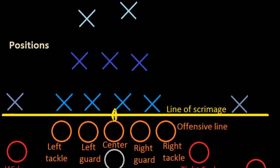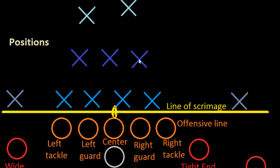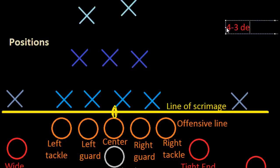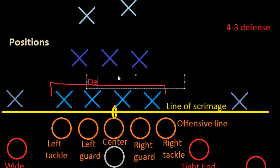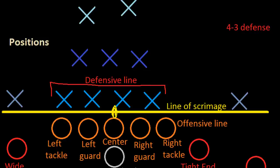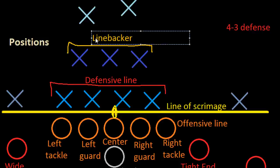Moving to defense, the players line up opposite the offense on the line of scrimmage. Their goal is to tackle whoever has the ball. They are currently lined up in what is called a 4-3 defense. The first number, 4, comes from the defensive line — there are four guys on the line. The 3 comes from the three linebackers positioned right behind the defensive line. So: four defensive linemen and three linebackers.